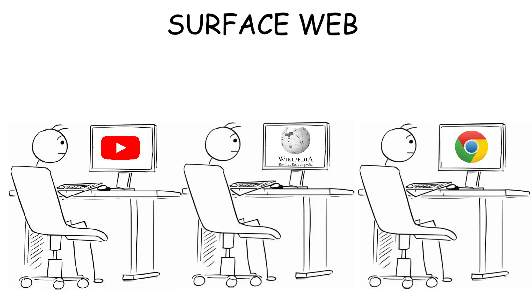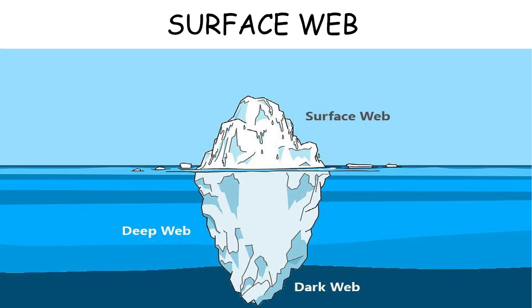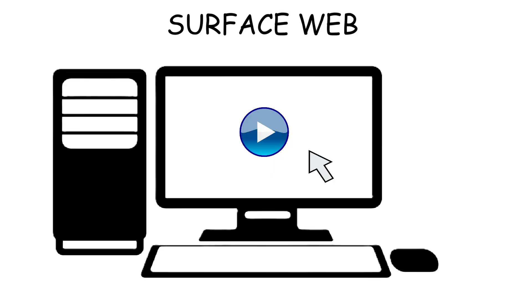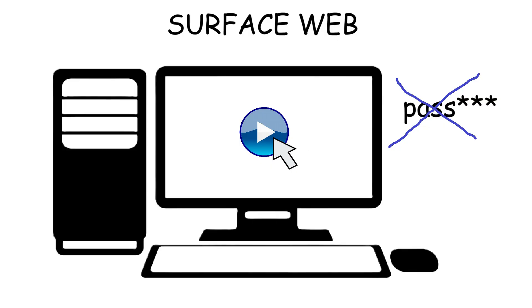The Surface Web is the part of the Internet that most people use every day, like watching YouTube videos, opening Wikipedia, or just random browsing on Google Chrome. The Internet or websites can be grouped into three categories based on how accessible they are. The Surface Web is considered public, which means you can find and access things without inserting passwords or using any special software.